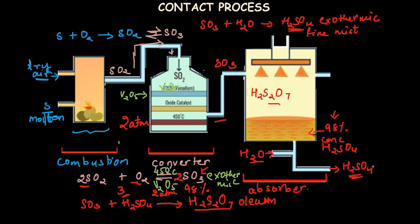The contact process has three main stages: first, combustion of sulfur to produce sulfur dioxide; second, conversion of sulfur dioxide to sulfur trioxide in the converter; and third, absorption of sulfur trioxide into 98% sulfuric acid to form oleum, which is then diluted with water to give sulfuric acid.